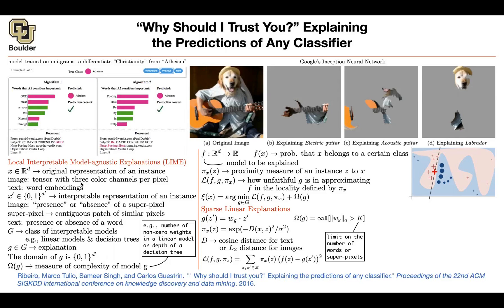Student question about omega(G) in sparse linear explanations: is it an infinite penalty if you exceed the super pixel or word count, and zero otherwise? Exactly — it's either infinity or zero. That's your budget for the number of nonzero terms in your weights. Note that this is not differentiable, so in practice you'd approximate it with a sigmoid, and the infinity is just a big number when you implement it.